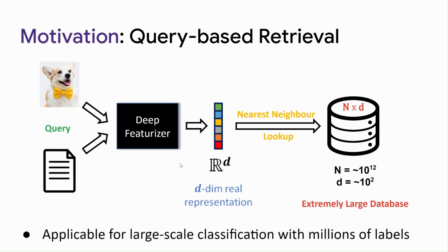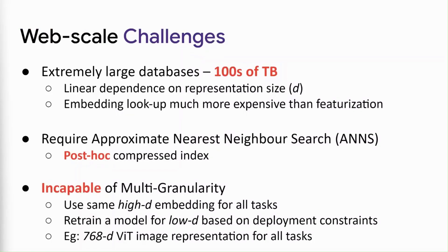A similar outlook also applies to large-scale, million-to-billion-way classification. The challenges at web scale involve massive storage costs for hundreds of terabytes of database, linear dependence on representation size d, requirement for post-hoc compression indices, and approximate nearest neighbor solutions to scale to web scale.